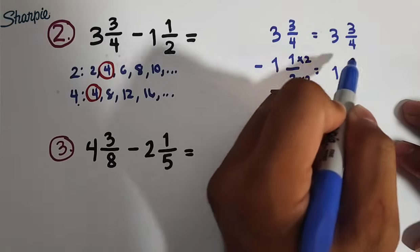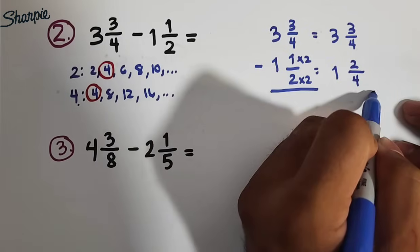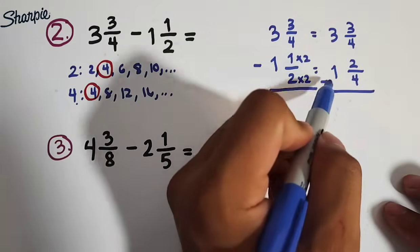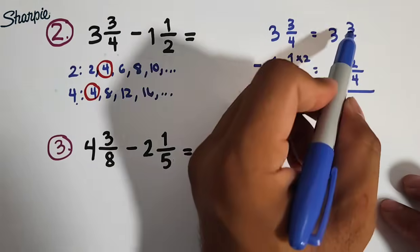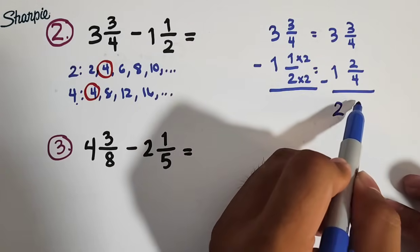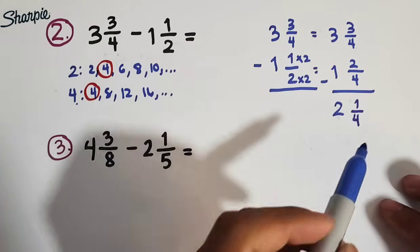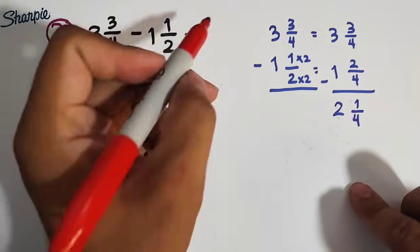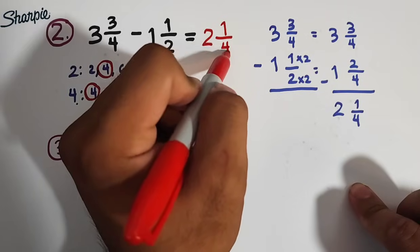So, we have now 1 times 2, which is 2, over 2 times 2, which is equal to 4. And then there you have it. We are now ready to subtract these mixed numbers. 3 minus 1, that is equal to 2. And then, 3 minus 2, we have 1, copy your denominator, which is 1 fourth. Ibig sabihin ito guys, that the final answer, number 2, is equal to 2 and 1 over 4.